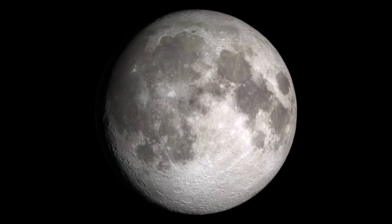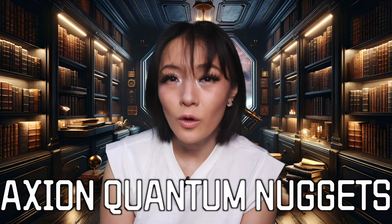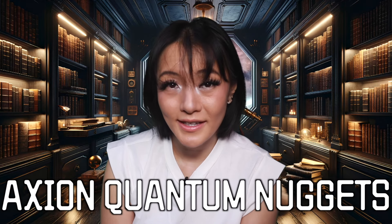The last mystery is a bit of a weird one and would usually seem completely unrelated, but the TEC rate seems to be correlated with the rate of strong earthquakes — those with magnitudes greater than eight. To explain this, we introduce AQNs: Axion Quark Nuggets.